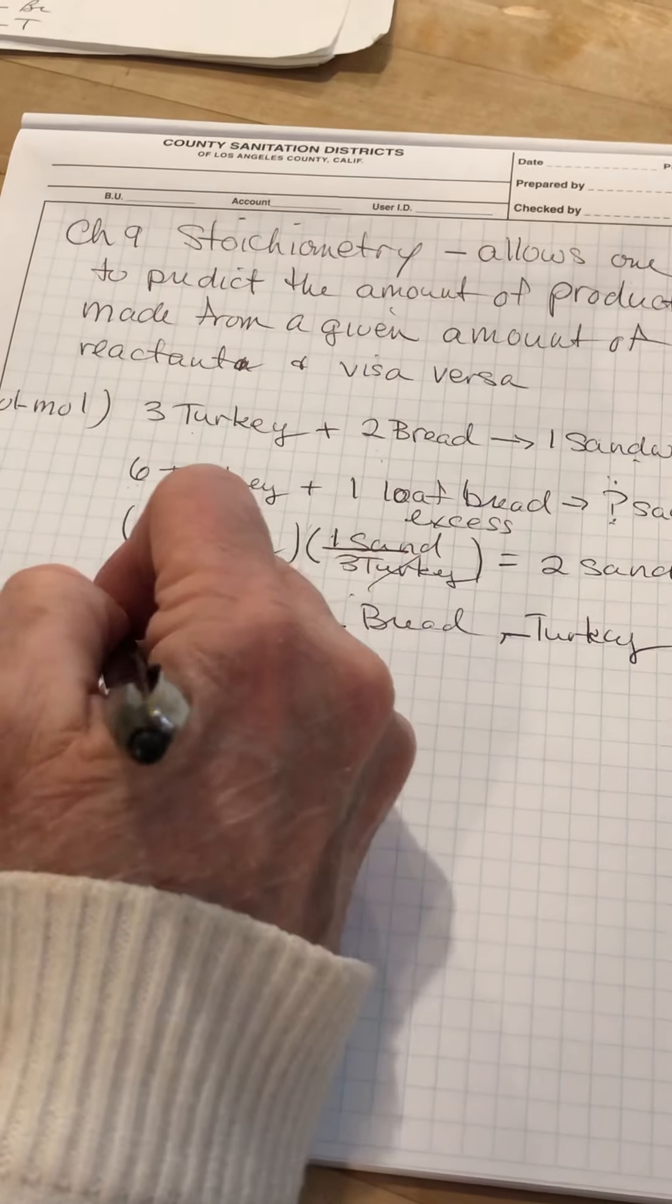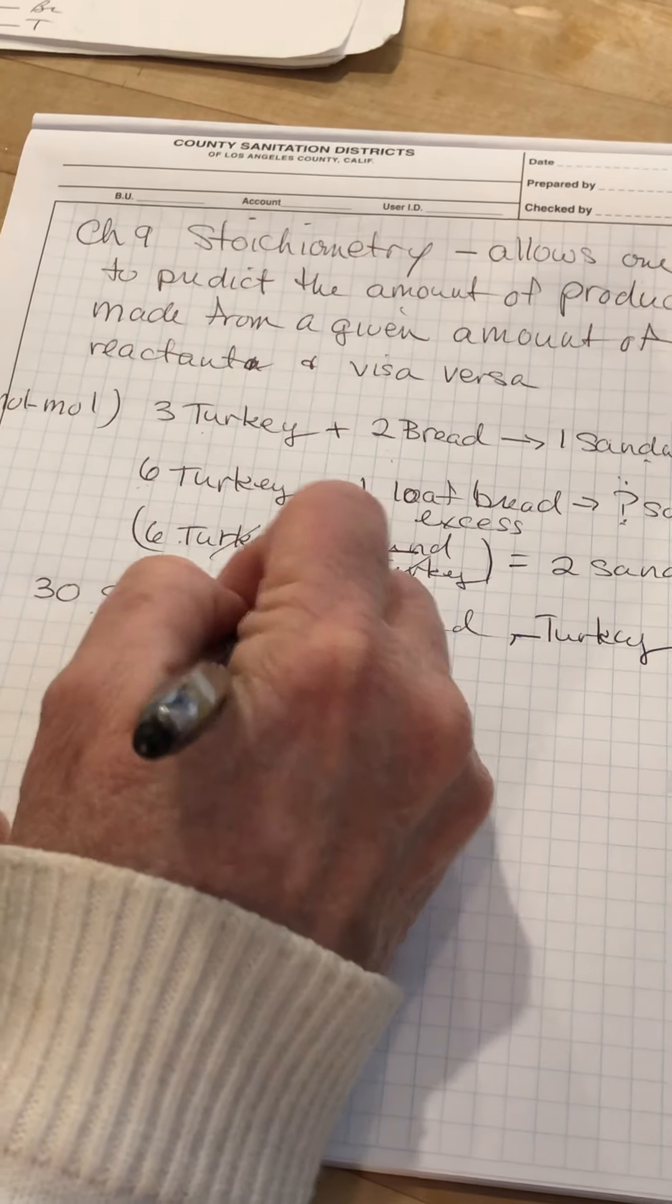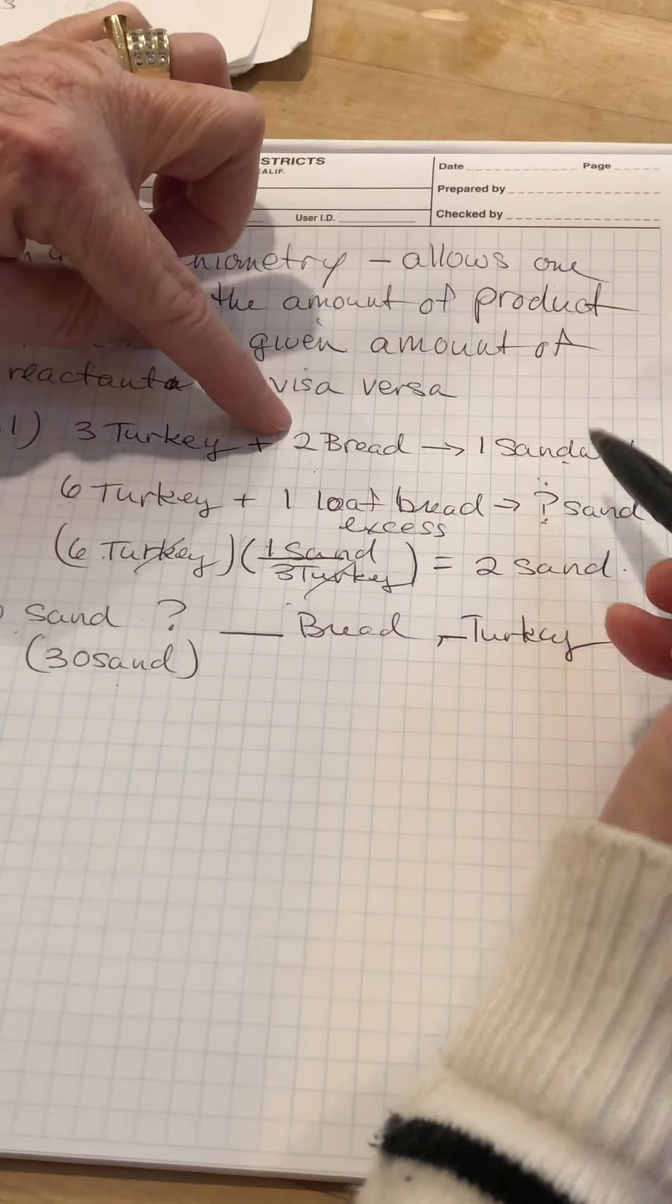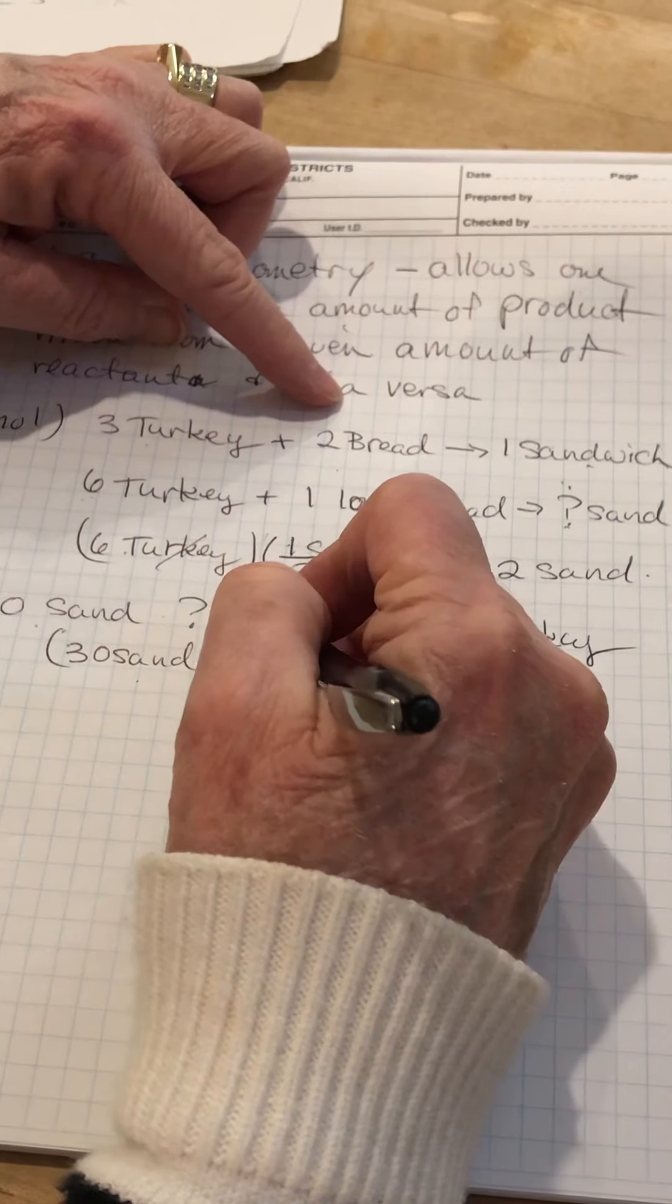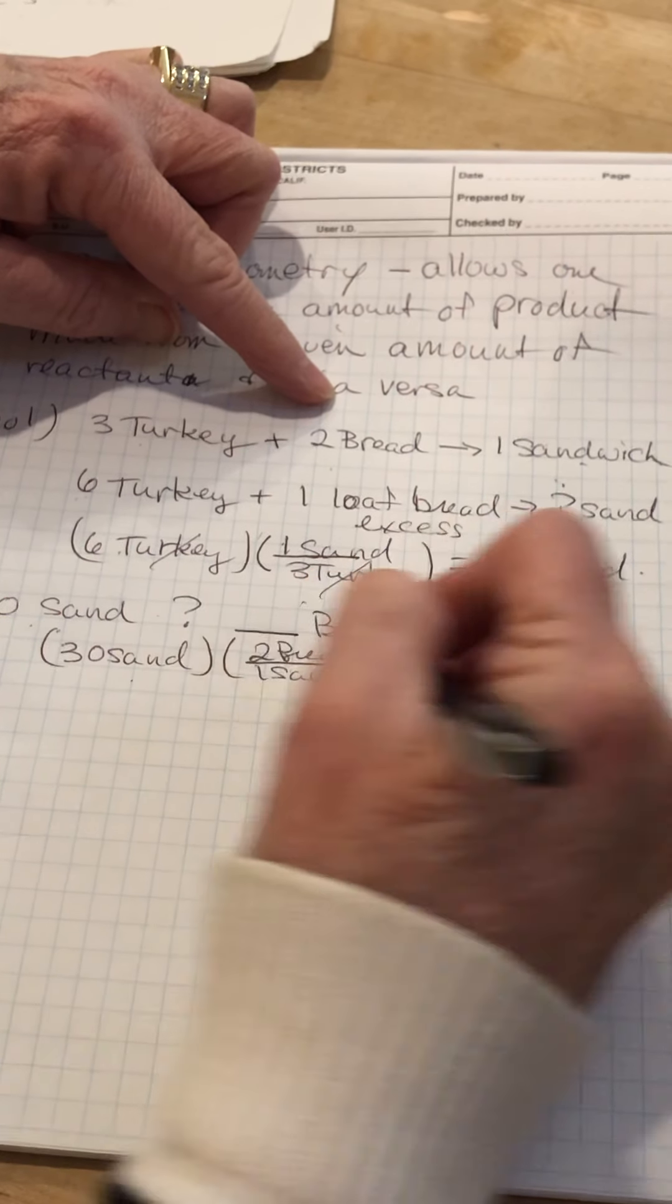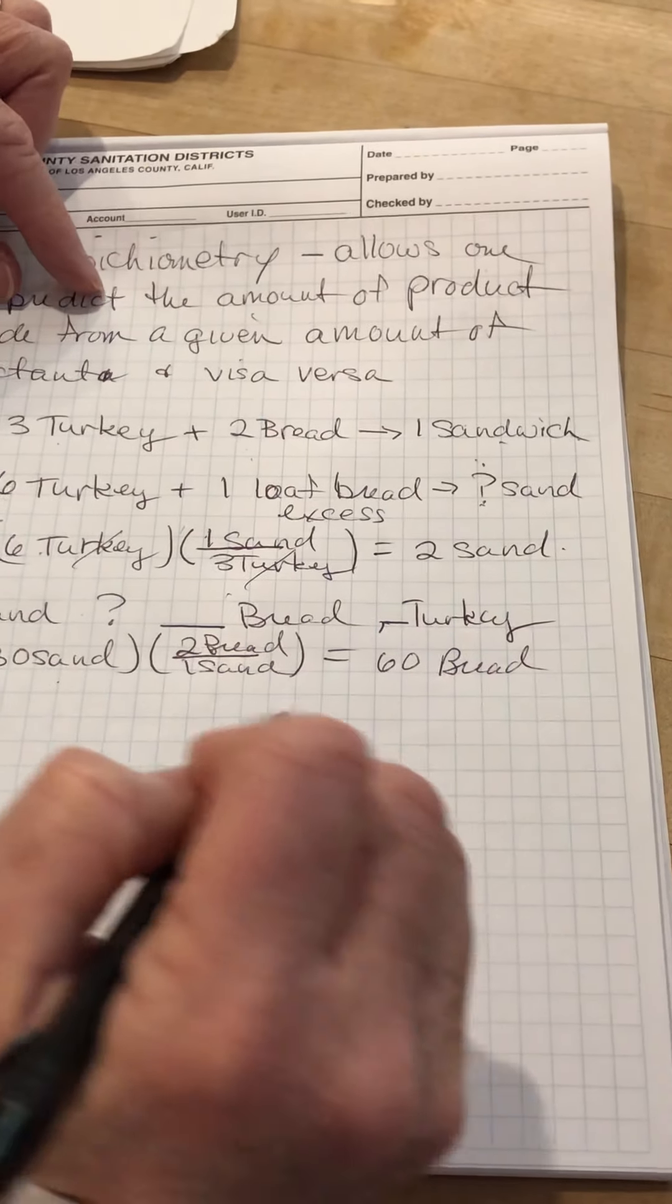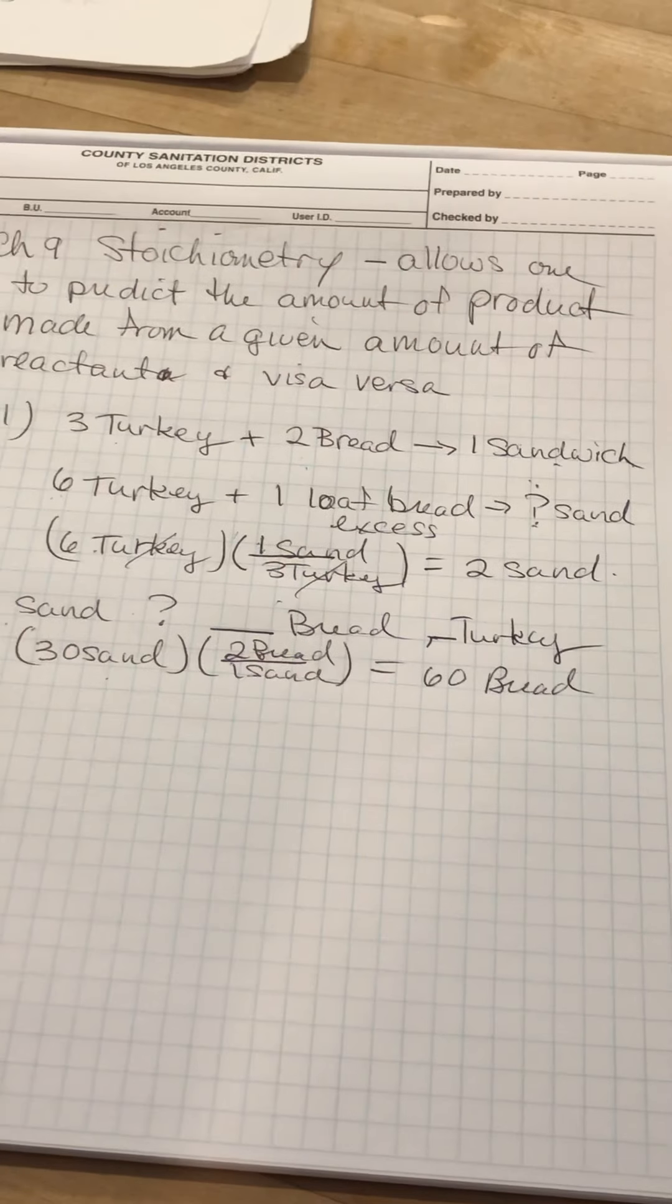I'm going to set up the same thing. I'm going to take my given, 30 sandwiches. And I'm going to look at the ratio of, let's see, what did I ask for bread? I'm going to look at the ratio of bread to sandwiches. And the balanced equation up here says that I need two slices of bread for every one sandwich. Or I need 60 slices of bread.